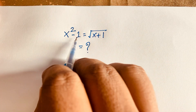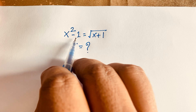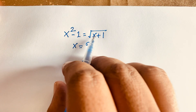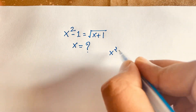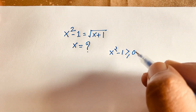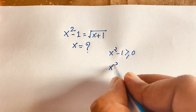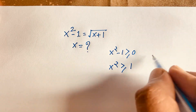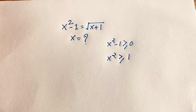Here, x squared minus 1 is always greater than or equal to 0. Because of that, we have square root of x plus 1. So in this expression, x squared minus 1 is greater than or equal to 0, which means x squared is greater than or equal to 1. If we move the 1 to the other side, it will be positive 1. So let's start.